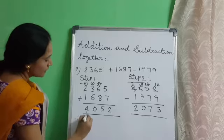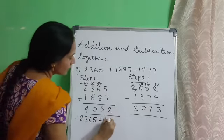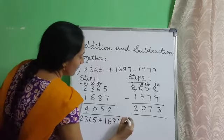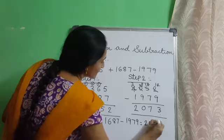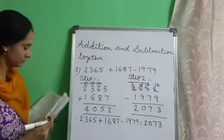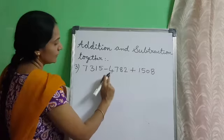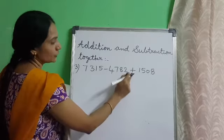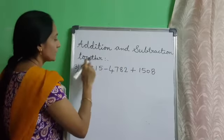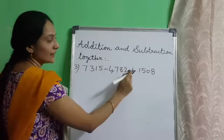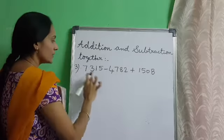The final answer is: 2365 plus 1687 minus 1979 is equal to 2073. The next problem is 7315 minus 4782 plus 1508. First, we will subtract the first two numbers, and then add the third number to the difference of the first two numbers.